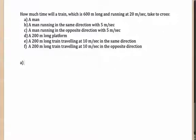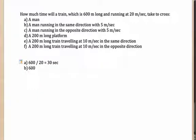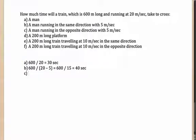First: how long will the 600-meter train running at 20 m/s take to cross a stationary man? The length to cover is 600 meters at 20 m/s, giving 30 seconds. What if the man is running in the same direction at 5 m/s? The distance is still 600 meters, but the relative speed is 20 minus 5 = 15 m/s, so the answer is 600/15 = 40 seconds.